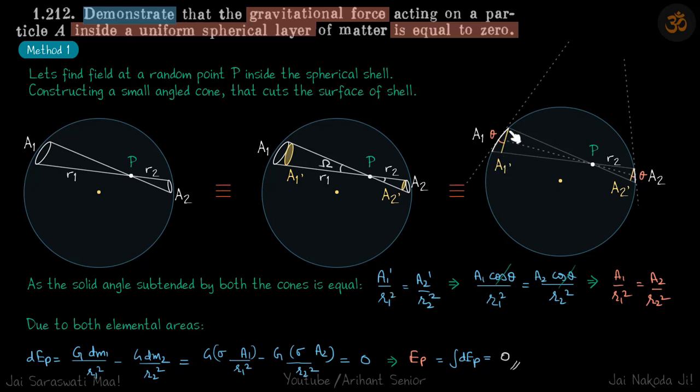We already saw that A1 dash is A1 cos theta, so now we can say A1 cos theta by r1 square equals A2 cos theta by r2 square, or in other words A1 by r1 square equals A2 by r2 square.